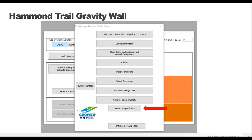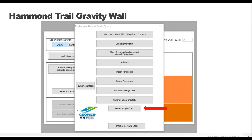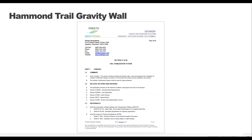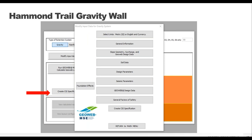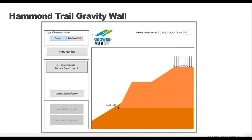The last tab in the menu gives you the option to create a CSI specification, which will be specific to your project. It comes in a Word document — you fill out a couple of questions and this tab brings you to the online spec maker tool. You don't have to create the CSI spec now; you can go to the main menu at any time to create one. So we're through the whole list and return to the main menu screen, where the model on the right is now based on our data and we're ready to run the analysis.